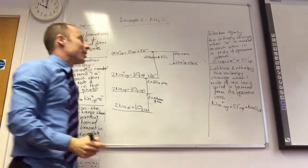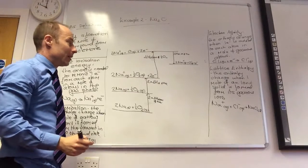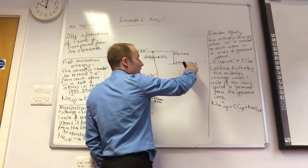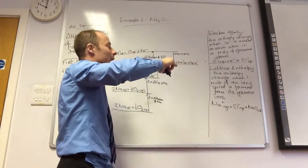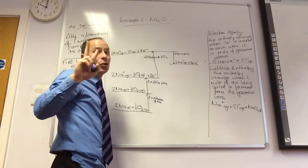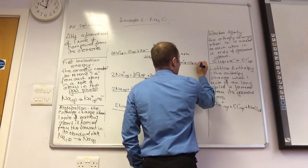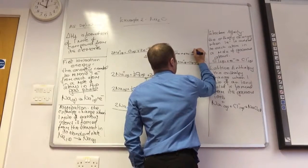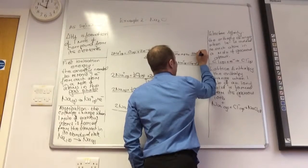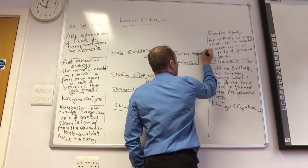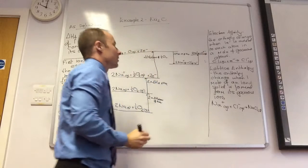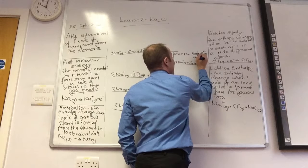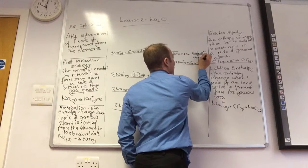The first electron affinity is going to be exothermic. Now for the second electron affinity — I've only got one minus on that O and I need to have 2, so I've got to go up again. That gives 2 Na⁺ gas plus O²⁻ gas. That is ΔH second electron affinity of O.